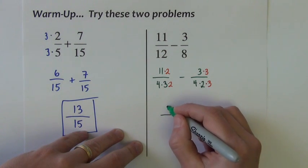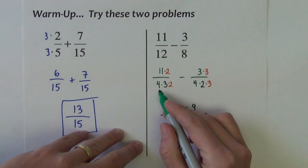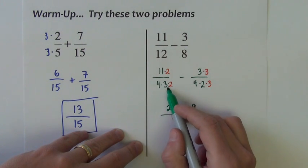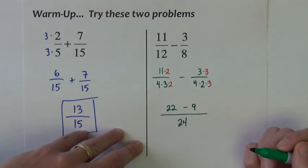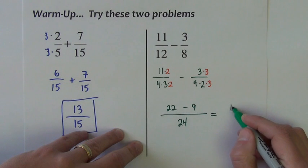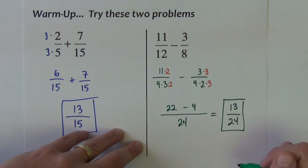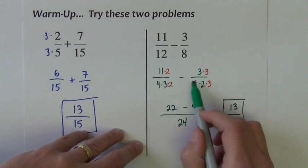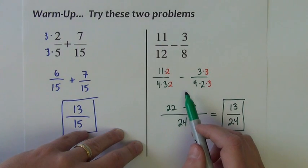So I have 22 minus 9, that's the numerator, over the common denominator, which is 4 times 3 times 2. 4 times 3 times 2 is 24. Go ahead and subtract in my numerator, and I get 13 over 24. This strategy and kind of approach to the problem is more or less how we're going to do the problems today.